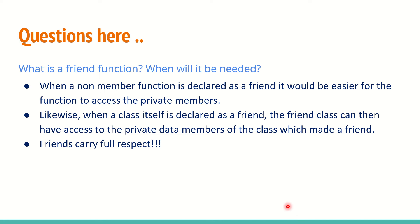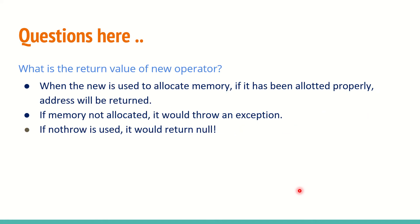Similarly, a class has private content with variables, classes, and objects — it will not allow anybody else to access it. But when declared as a friend function, that entity can access the private content. Similarly, a class can also be made a friend class.